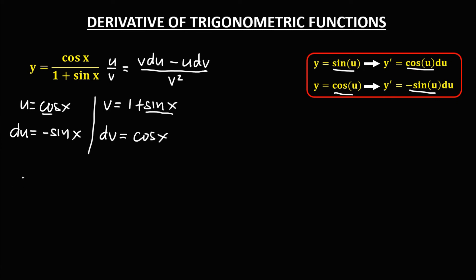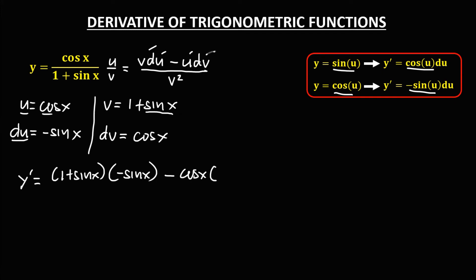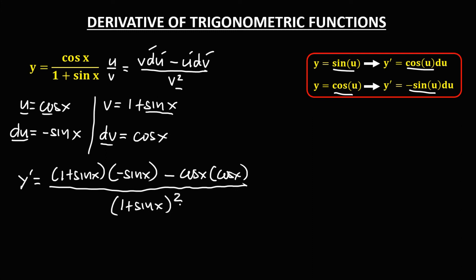Applying the quotient rule formula, y prime equals v times du minus u times dv, all over v squared. So we have 1 plus sine x, times negative sine x, minus cosine x times cosine x, all over 1 plus sine x, to the power 2.